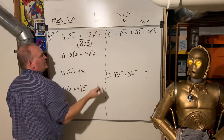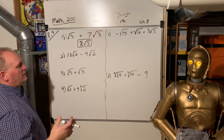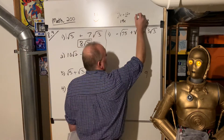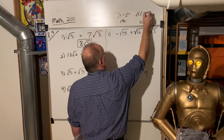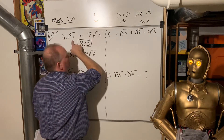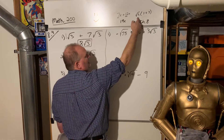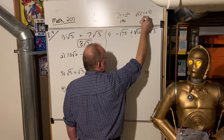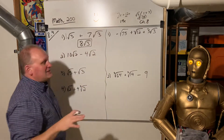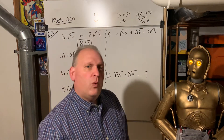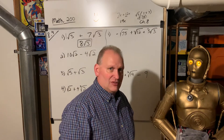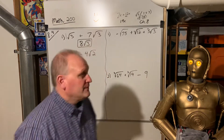If we think about what's going on there, we've learned how to factor. We could factor out a square root of 3 out of both of those, and then we'd just have 1 plus 7. And then 1 plus 7 is 8, and 8 times the square root of 3 is just 8 square roots of 3. That's why we get to add them that way.